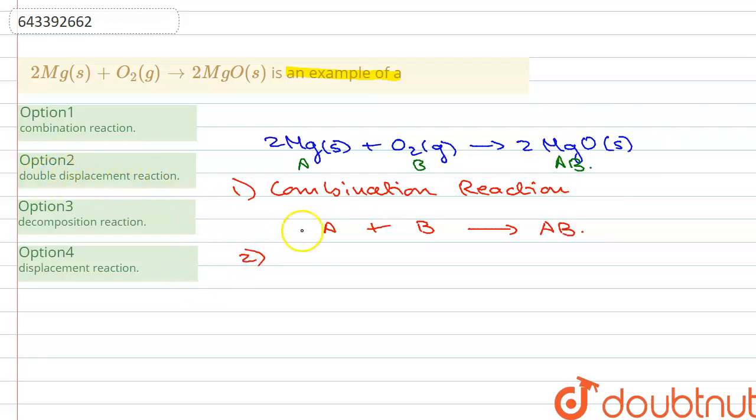Another option is double displacement reaction. So in such type of reaction what happens is, let's suppose that we have AB and we have CD. Now here what you can see is like B and D are the ions. Now these two are the elements.